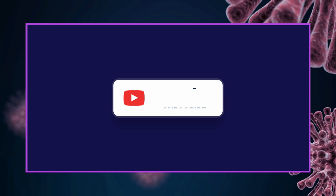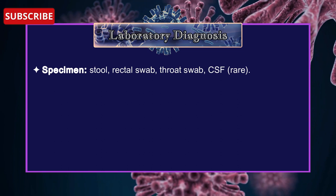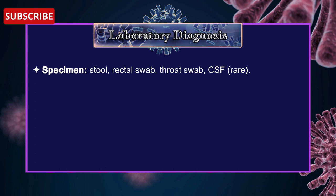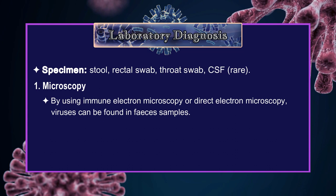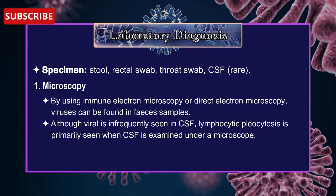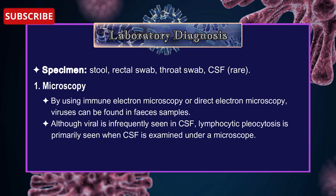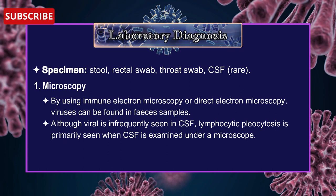Laboratory Diagnosis of Poliovirus. The specimen is stool, rectal swab, throat swab, or cerebrospinal fluid. 1. Microscopy: By using immune electron microscopy or direct electron microscopy, viruses can be found in faeces samples. Although viral presence is frequently seen in cerebrospinal fluid, lymphocytic pleocytosis is primarily seen when cerebrospinal fluid is examined under the microscope.